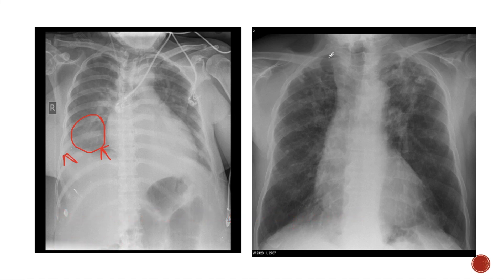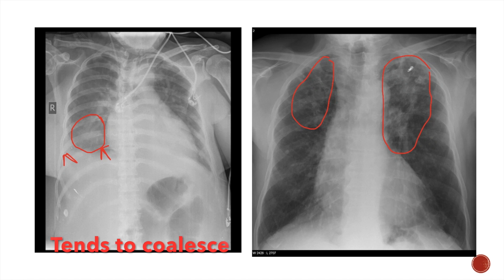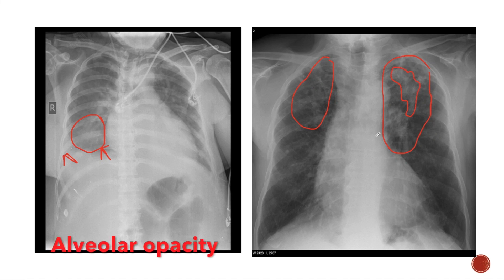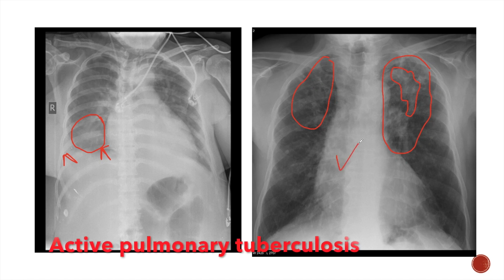Now look at the second X-ray. In the second X-ray we can see opacities in both the upper zones, more so in the left upper zone. The opacity also tends to coalesce, forming a patch in the left upper zone. This is also an alveolar opacity. This was a case of active pulmonary tuberculosis.